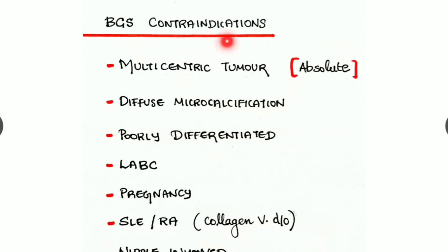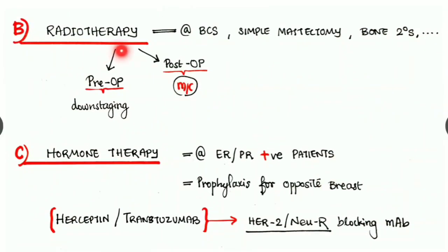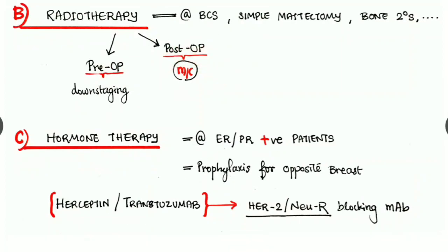The second treatment method is radiotherapy. We are using it in breast conservation surgeries, simple mastectomy, and bone secondaries. There can be two types: preoperative radiotherapy and postoperative radiotherapy. Preoperative radiotherapy helps in downstaging the tumor, and postoperative radiotherapy is the most commonly done. Next is hormone therapy. We are using it in estrogen receptor or progesterone receptor positive patients. It can be used as prophylaxis for the opposite breast. One of the most commonly used hormones are Herceptin or trastuzumab, which are HER2/neu receptor blocking monoclonal antibodies. Other example is tamoxifen.